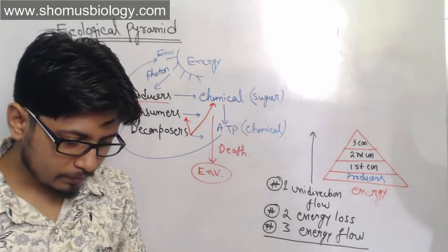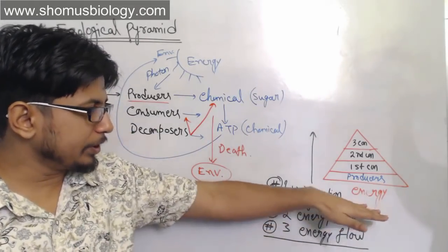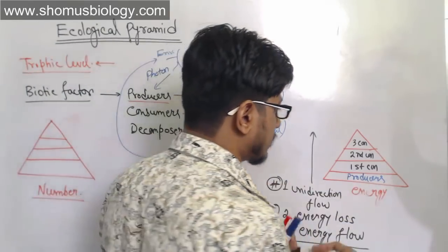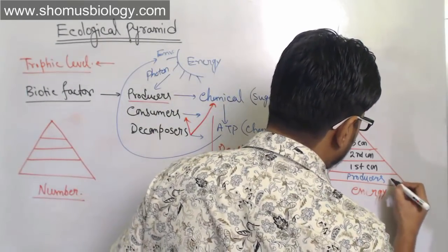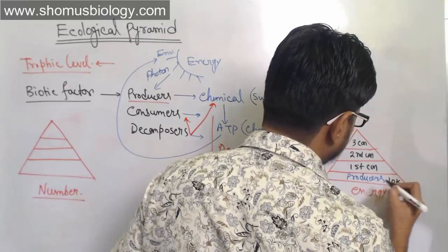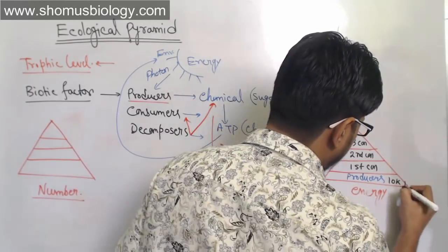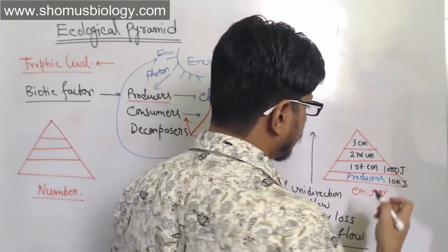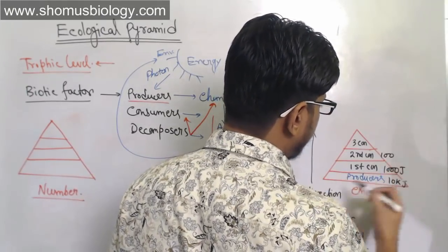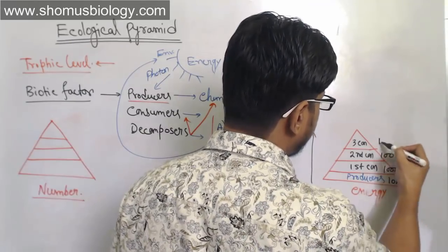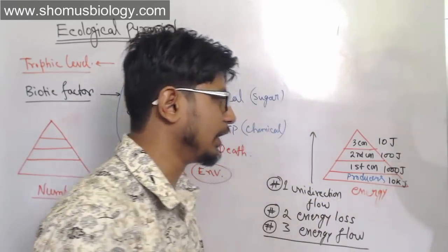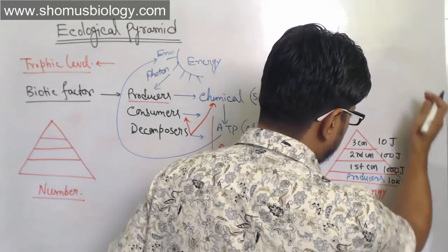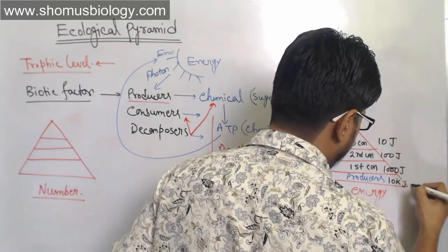If producers have 10,000 joules of energy, only 1,000 joules are transferred to the primary consumer. From primary consumer, only 100 joules go to the secondary consumer, and only 10 joules reach the tertiary consumer. This is how energy loss works across trophic levels.